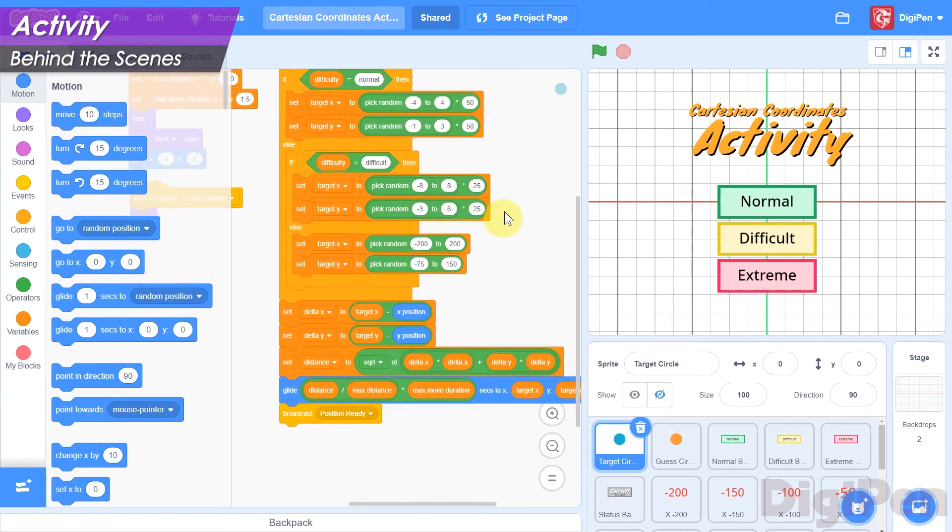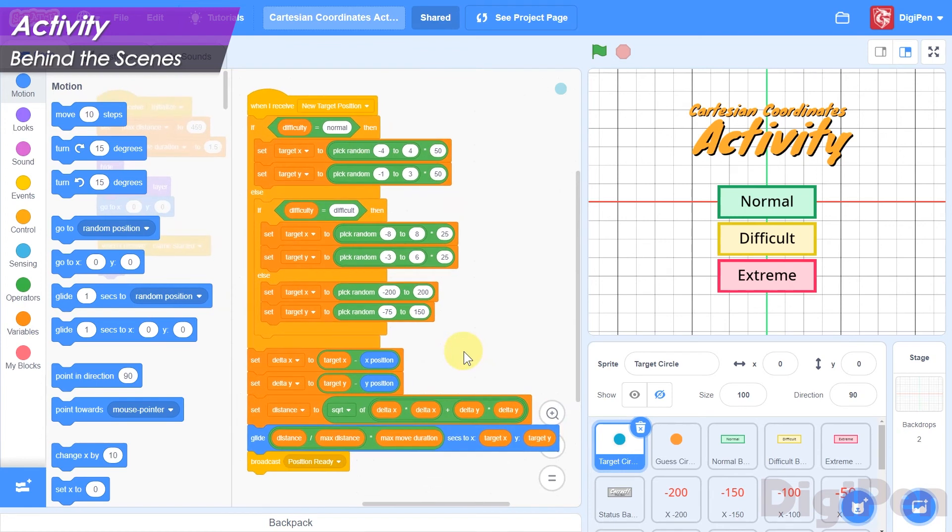It's the tallest stack of code in here. When this sprite receives the message that it should pick a new target point, it checks which difficulty has been selected.